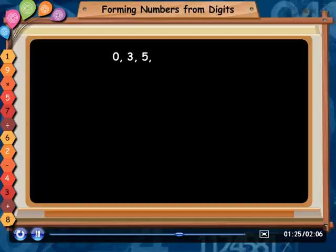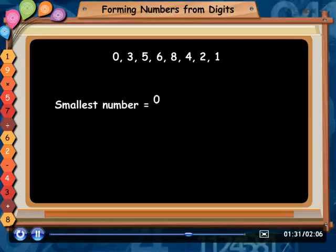0, 3, 5, 6, 8, 4, 2, 1. So, to form the smallest number, we write the digits in ascending order, like this.